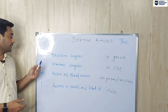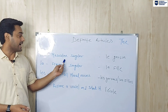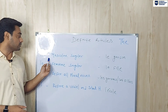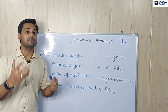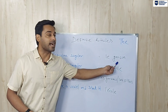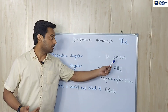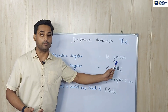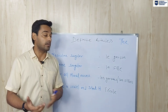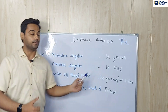We use 'le' before any masculine singular noun. For example, 'le garçon' — 'le garçon' — that means 'the boy'. Garçon means boy. Boy is masculine and singular. That's why we have used 'le' — 'le garçon', the boy.